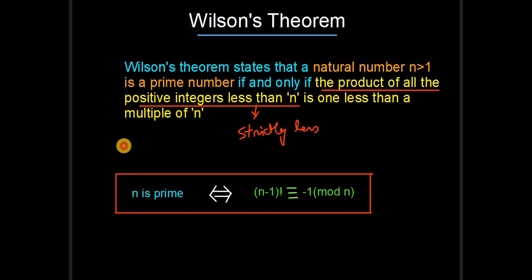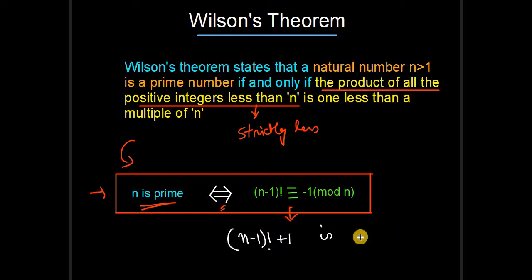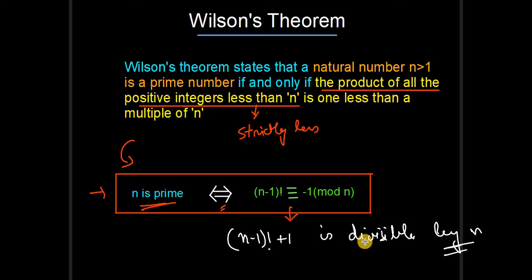Now I have tried to make this easy by writing it like this: n is prime if and only if (n-1)! is congruent to -1 mod n. If you know about congruence you can understand this, but to simplify further, it is the same as saying (n-1)! + 1 is divisible by n.